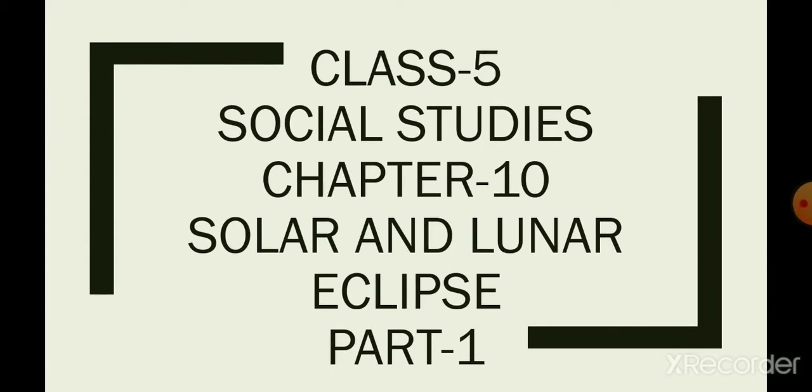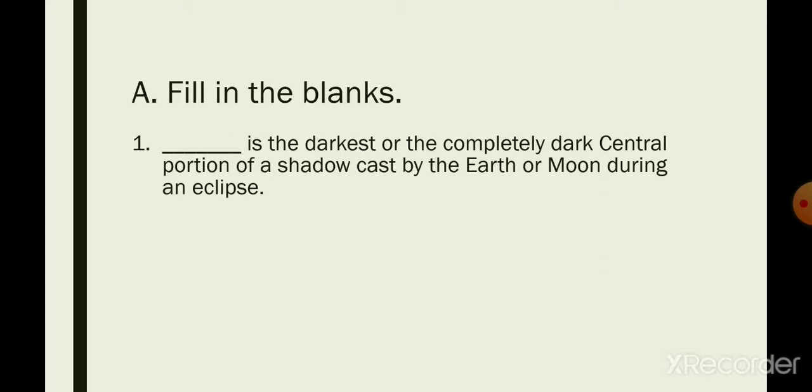Hello students, in this video we will do exercises from chapter number 10 of a social studies book. The name of the chapter is Solar and Lunar Eclipse. A. Fill in the blanks. Number one: blank is the darkest or the completely dark central portion of a shadow cast by the Earth or Moon during an eclipse.